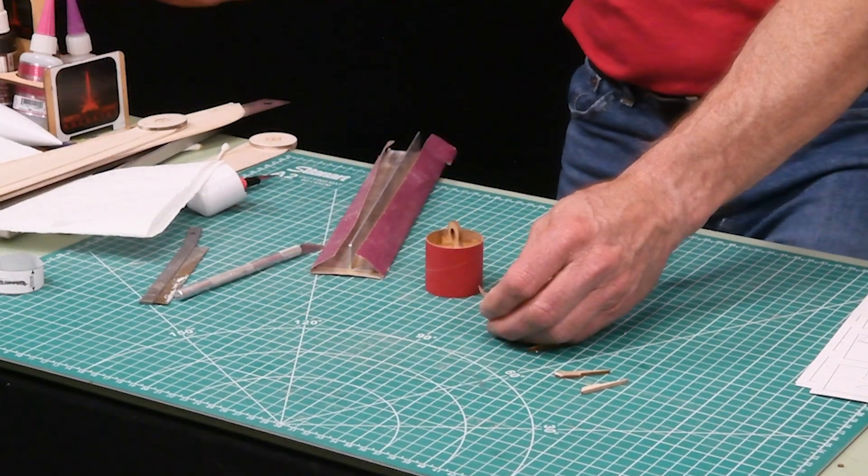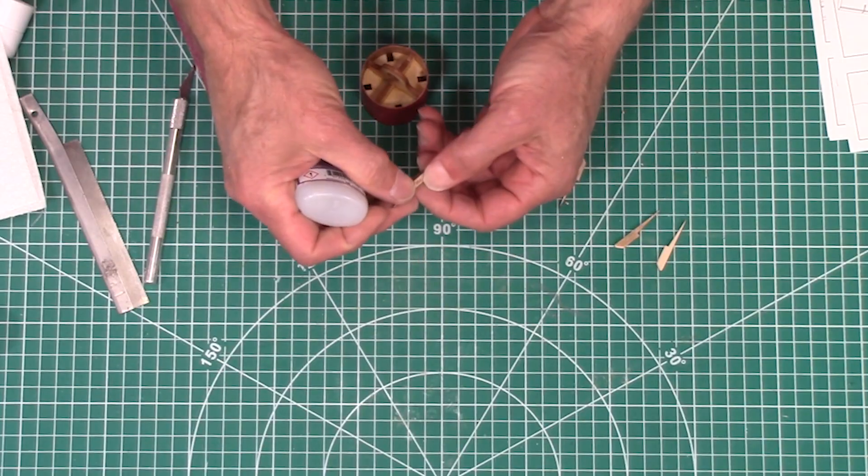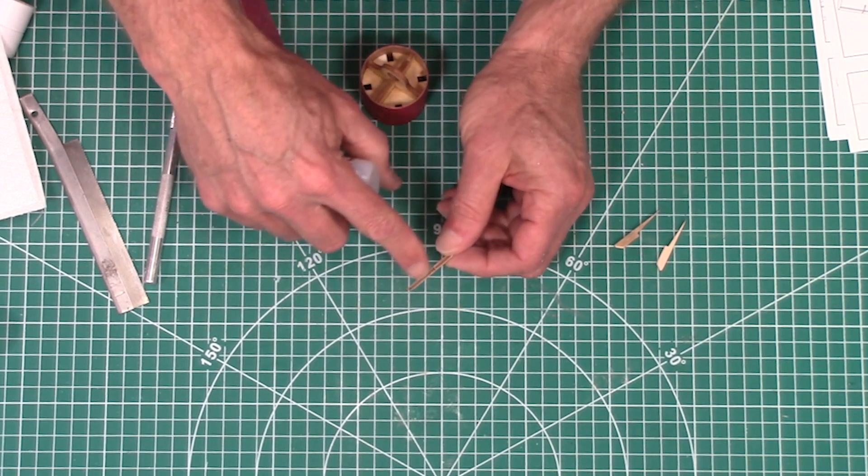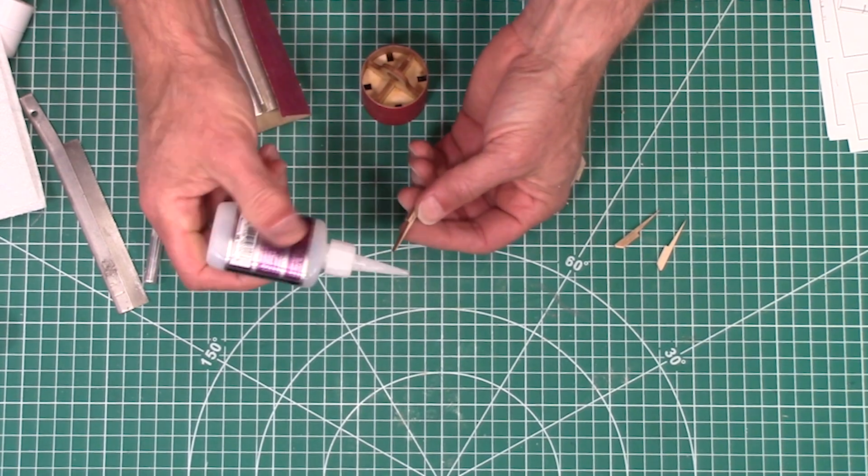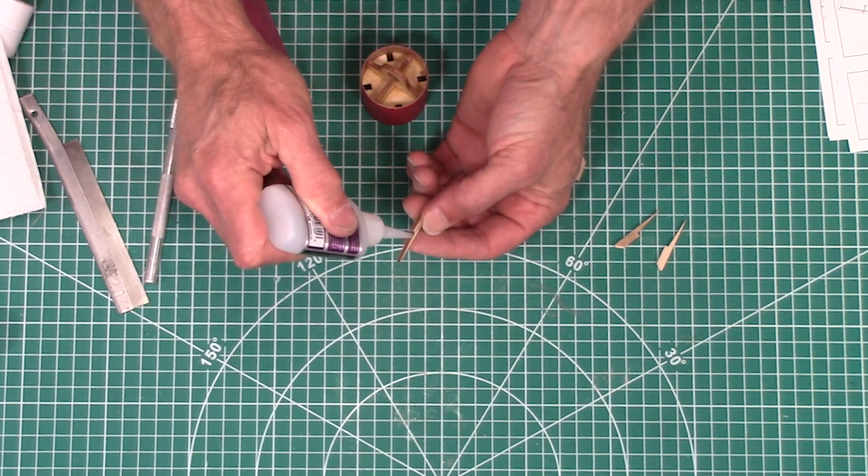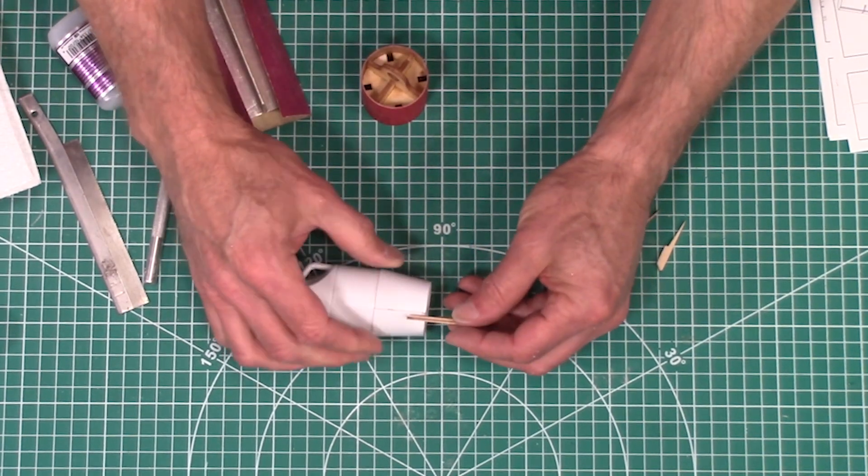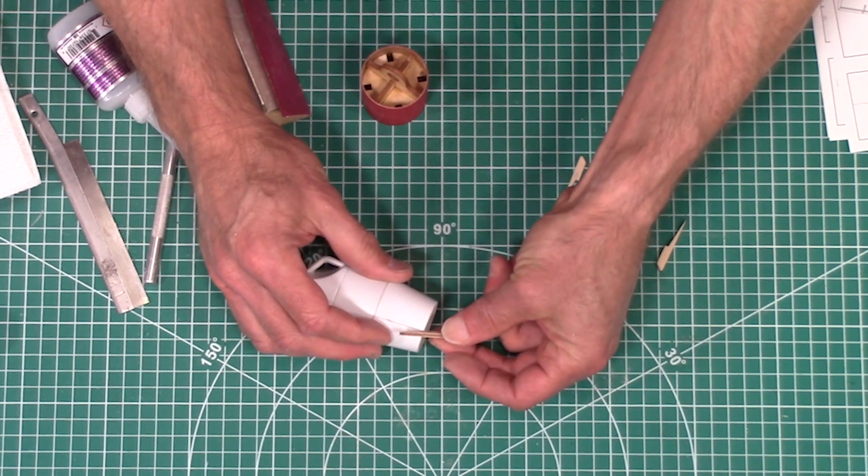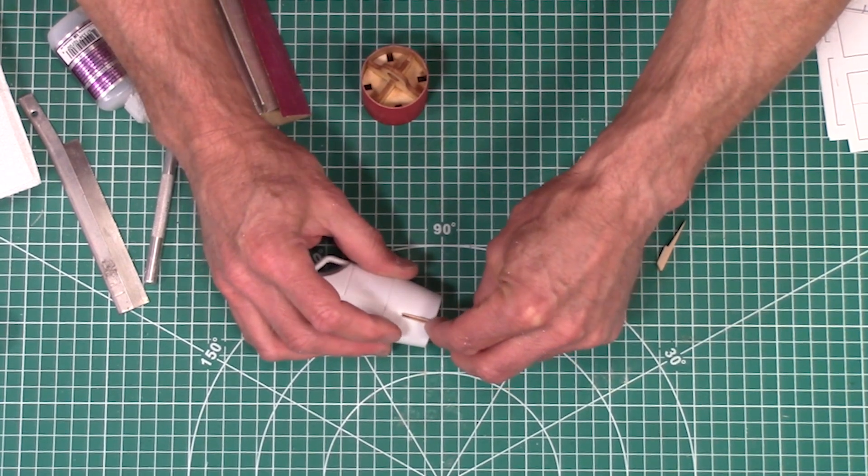And to glue these on we're going to use some medium or thick CA. Don't want to use thin on there because the thin CA will wick right into the wood. And then you'll probably glue your finger to the part. So this we're going to put on. We're going to kind of put it in the corner there and then walk it forward along the line.